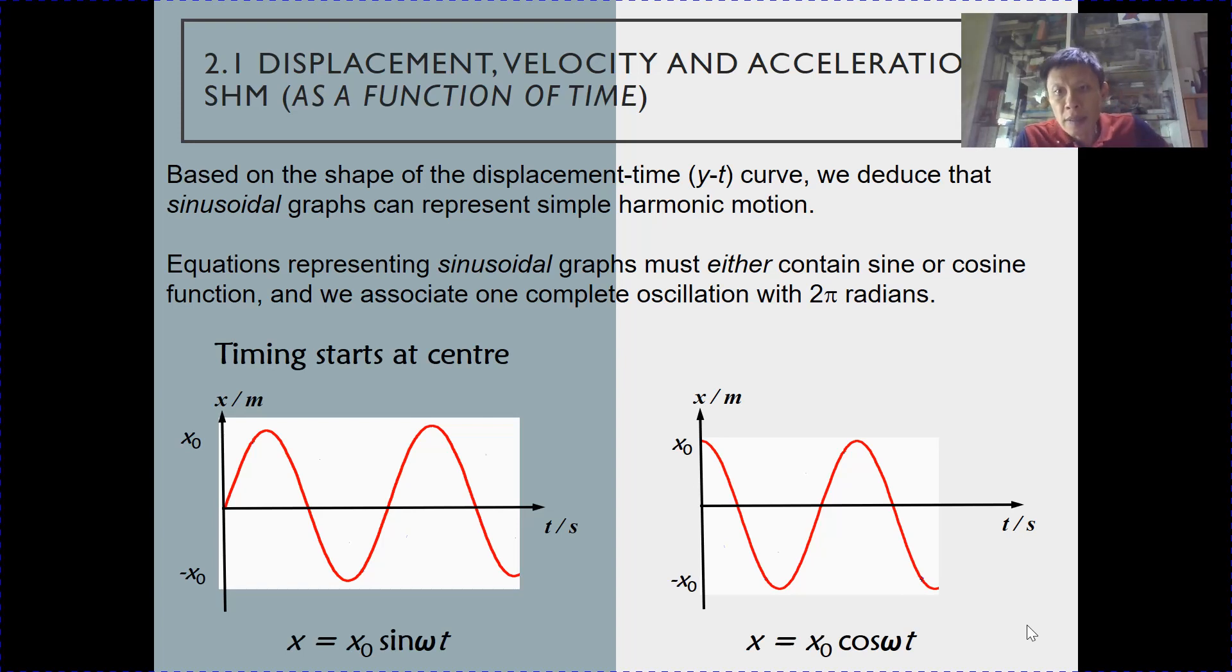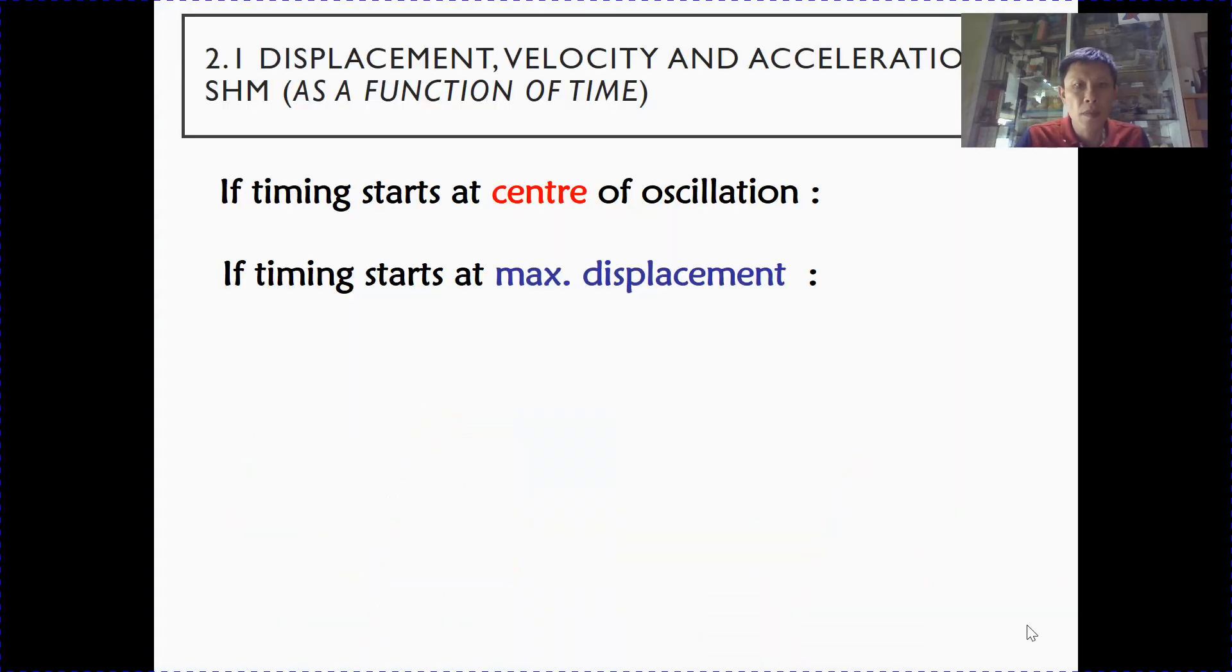On the other hand, if your timing starts from the extreme position or maximum displacement at the amplitude, then you can see that at time t equals zero, the displacement is at x0. So for such cases, we use a cosine function to represent the displacement. So if the timing starts at center of oscillation, we use a sine graph. If the timing starts at the amplitude position, we will use a cosine graph.